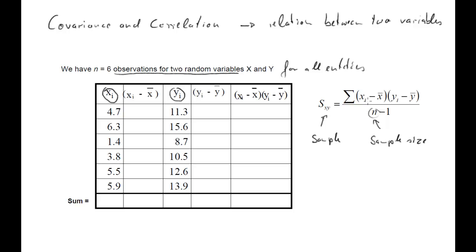The term xi − x̄ looks familiar because when we calculated the sample variance of x, we computed the sum of (xi − x̄)² divided by n − 1. Similarly, for the sample variance of y we needed yi − ȳ. So if you've already calculated variances, you actually have these deviation terms ready.